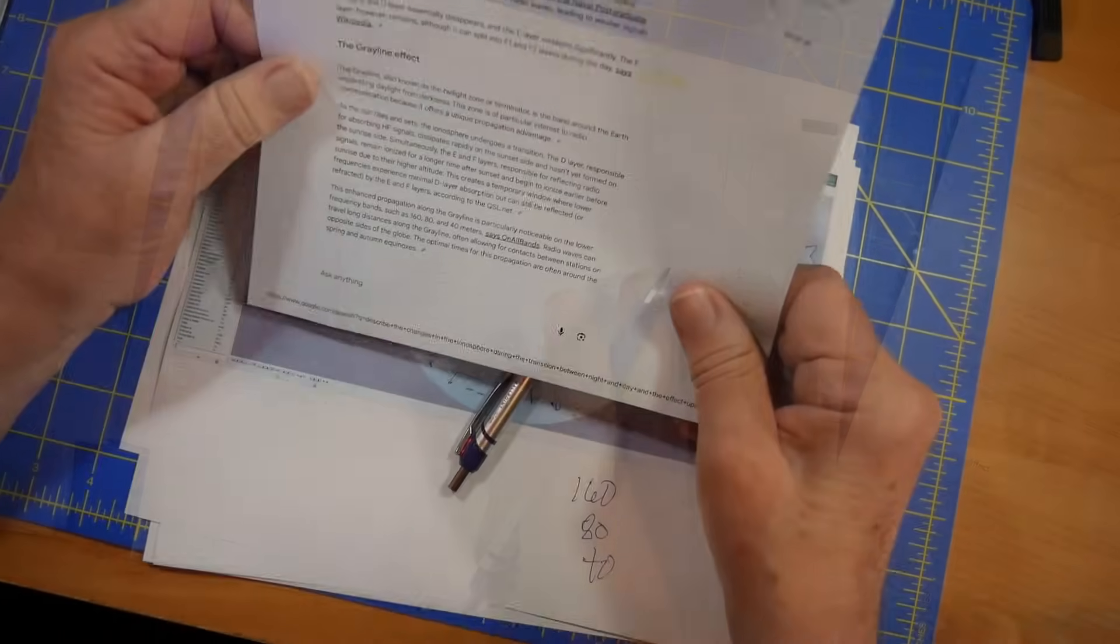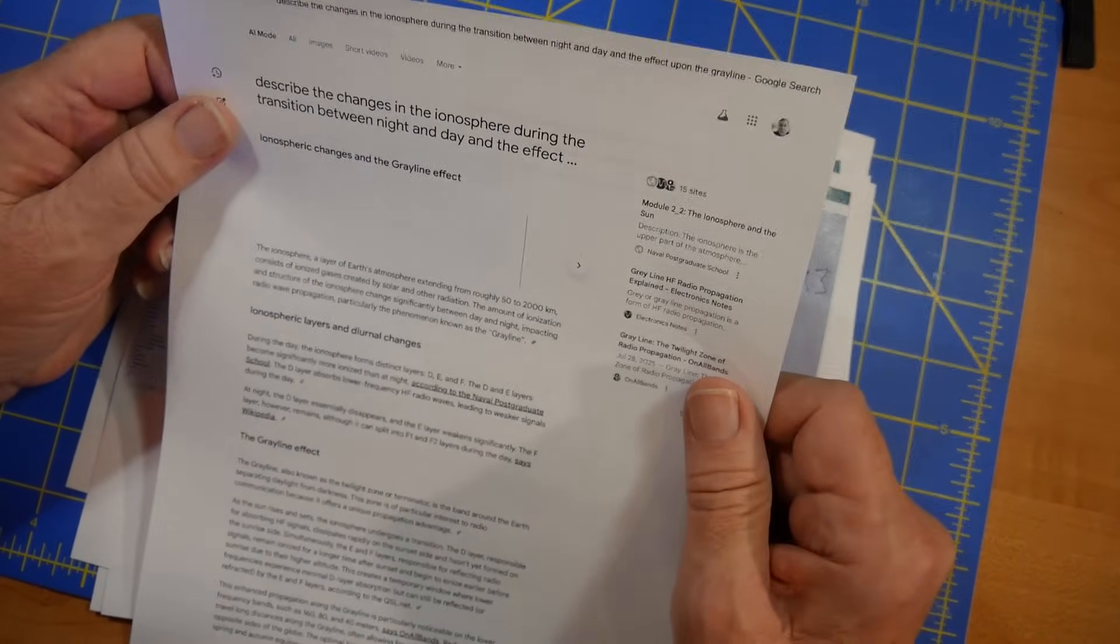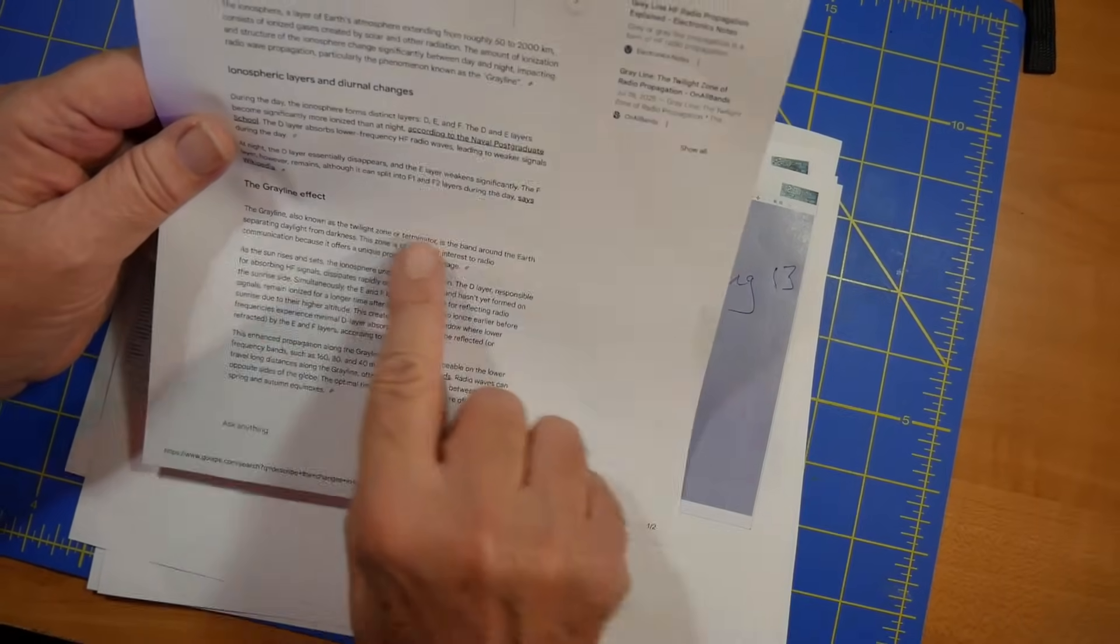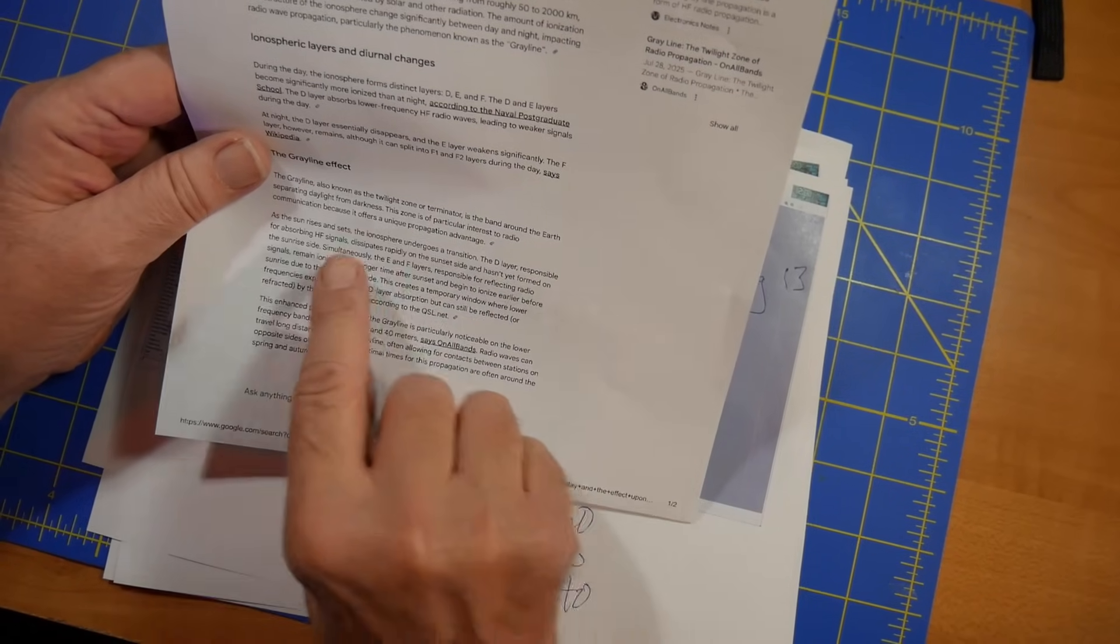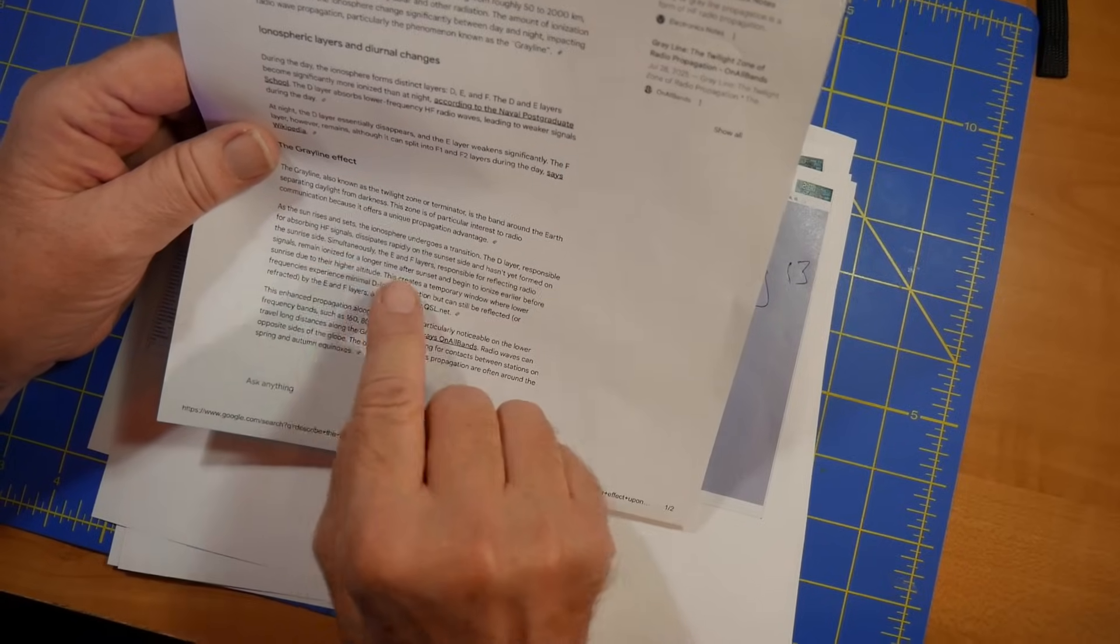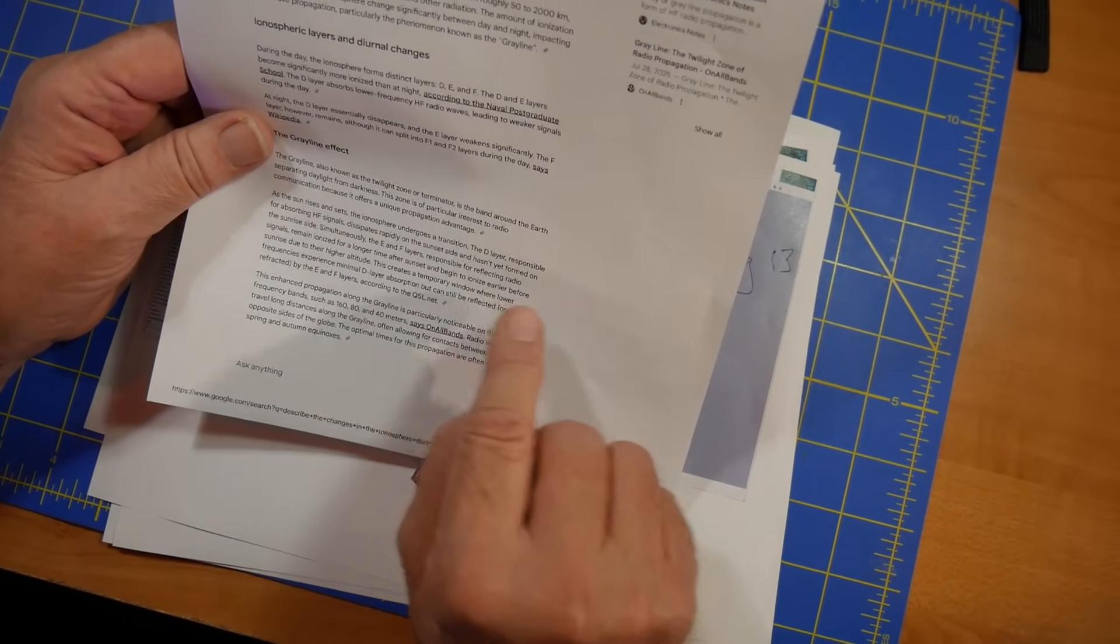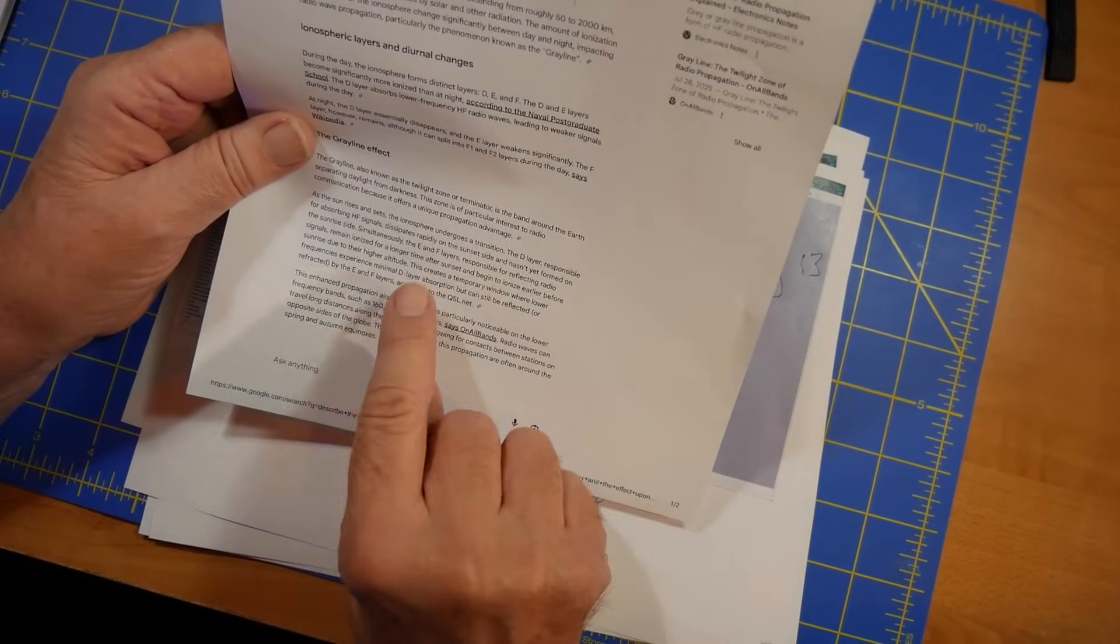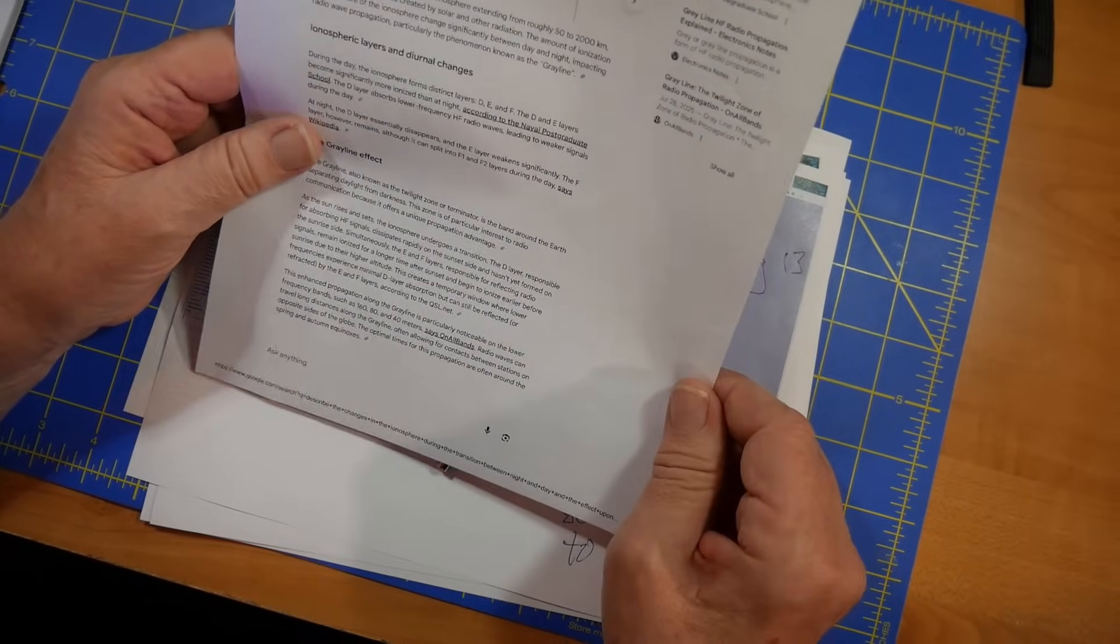DXers know this as a secret. Look this up on Google. Describe the changes in the ionosphere during the transition between night and day and the effect. And I put the gray line effect. Okay. It's a band around the earth. The sun rises and sets the ionosphere, undergoes a transition. The D-layer dissipates rapidly on the sunset side. It hasn't yet formed on the sunset side. Simultaneously, the in-effilators remain ionized for a longer time after sunset and begin to ionize earlier. So this creates a temporary window where lower frequencies experience minimal D-layer, but can still be reflected by the E and F layers. Okay.